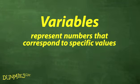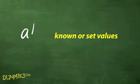Algebra uses letters called variables to represent numbers that correspond to specific values. Usually, if you see letters toward the beginning of the alphabet in a problem, like A, B, or C, they represent known or set values.